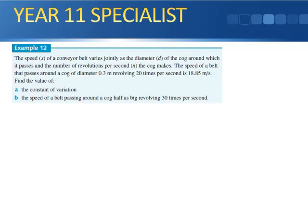Example 12. The speed s of a conveyor belt varies directly as the diameter d of the cog around which it passes, and the number of revolutions per second n the cog makes. So we have s varies jointly as d and n. Doesn't say anything that one squared or the other. So therefore I end up getting s equals k d n.